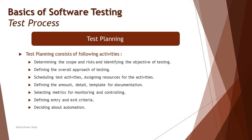Point number two is defining the overall approach of testing — the strategy. It's not the case that two different projects will be tested in the same manner. Recalling a key principle: testing is context dependent, meaning two different projects cannot be tested with the same approach. So determining the overall approach of the testing life cycle is also defined as part of test planning.